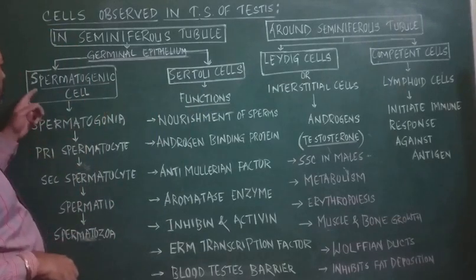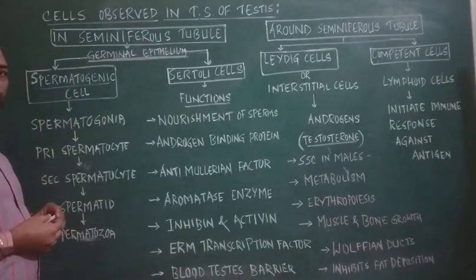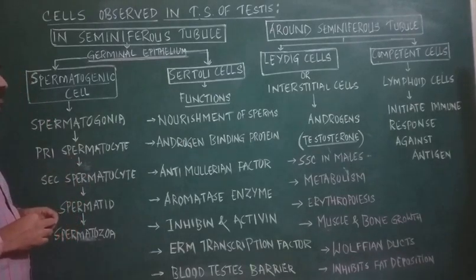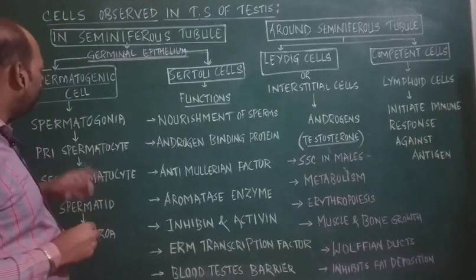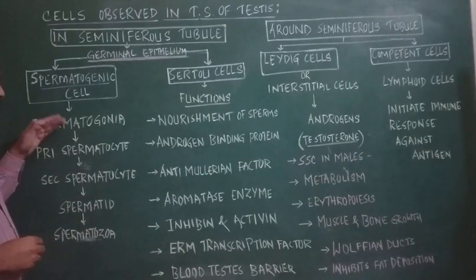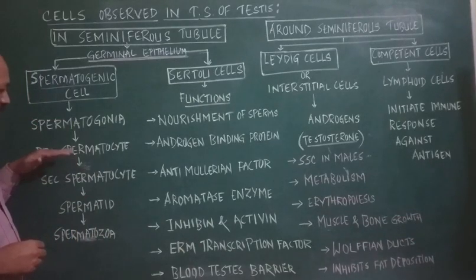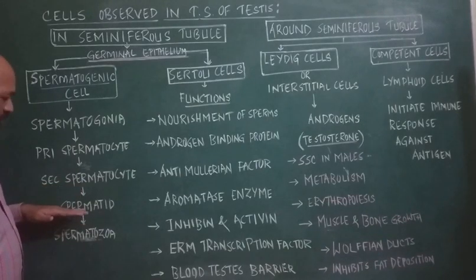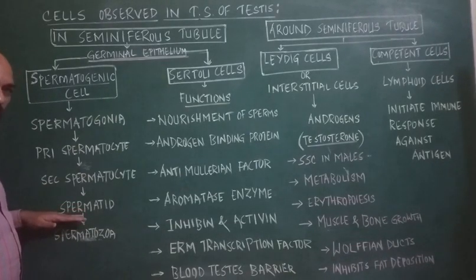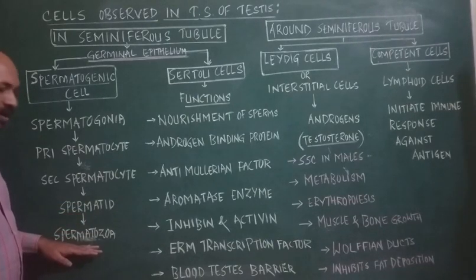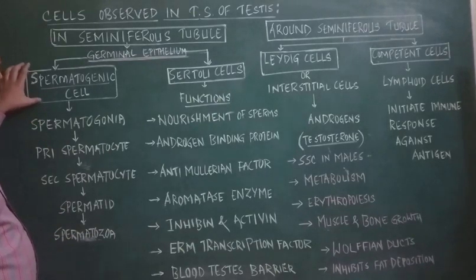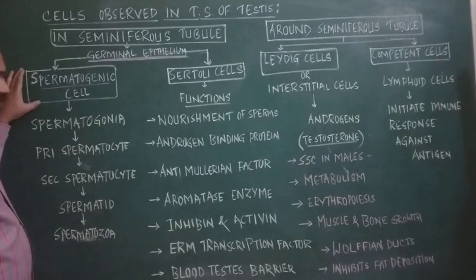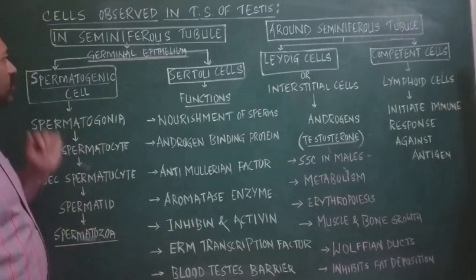Spermatogenic cells are diploid in nature and cuboidal in shape. These spermatogenic cells divide mitotically to give rise to spermatogonia. The spermatogonia divide mitotically to produce primary spermatocyte. Primary spermatocyte undergoes first meiosis to form secondary spermatocyte, which undergoes second meiosis to give rise to spermatid. Spermatids are non-functional, non-motile cells and get transformed by a process called spermiogenesis into spermatozoa, or sperm.